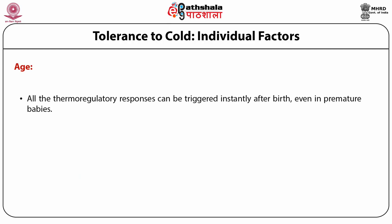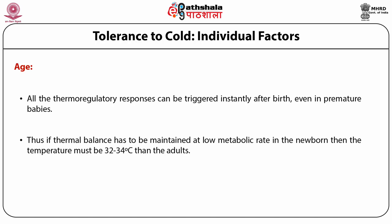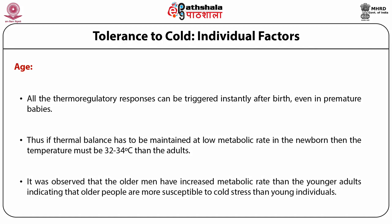Age: all thermoregulatory responses can be triggered instantly after birth. Even in premature babies, without shivering, heat production can be increased 100–200% above the resting metabolic rate. However, due to the larger surface area-to-volume ratio in newborns than adults, vasoconstriction is not as effective in reducing heat loss. If thermal balance is to be maintained at low metabolic rate in newborns, the temperature must be 32–34 degrees Celsius. Thermoregulatory responses are better in young adulthood than in old age. Cold-induced vasodilation of fingers and hunting waves were more rapid in young adult individuals. Men aged 22–73 years exposed to 10, 15, 20, and 28 degrees Celsius showed older men have increased metabolic rate, indicating greater susceptibility to cold stress with age.